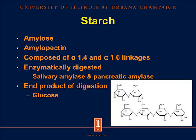Starch is composed of amylose, which are linear chains of glucose monosaccharides joined by alpha-1,4 bonds, and amylopectin, which are linear chains of glucose joined by alpha-1,4 bonds, but every 20 to 25 glucose monomers there are alpha-1,6 linkages, which are branch points, as you can see in the picture in the bottom right. Because starch is composed of alpha-1,4 and alpha-1,6 linkages, it is enzymatically digested by the pig via salivary amylase and pancreatic amylase, producing glucose as the end product, which is readily absorbed and utilized.